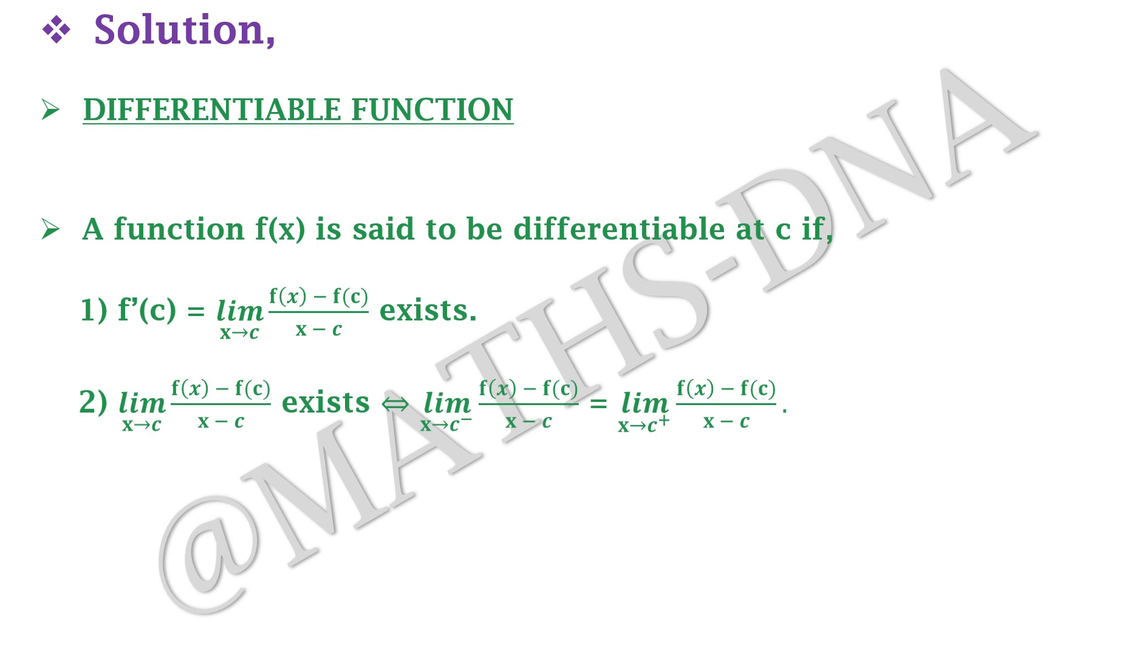It will exist when the left hand limit and right hand limit are equal. That is, limit x tends to c minus [f(x) minus f(c)] upon [x minus c] equals limit x tends to c plus [f(x) minus f(c)] upon [x minus c]. Now when we are clear with the definition, let us go to the question.